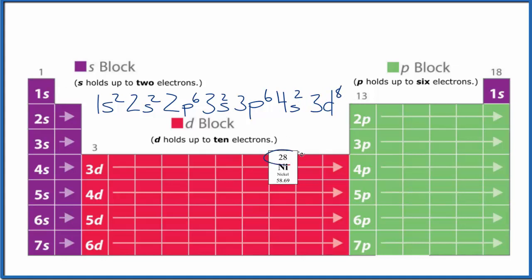And if you add the numbers up on top, that gives us 28. We have 28 electrons. So we use this electron configuration to write the orbital diagram, the atomic orbital diagram for nickel.